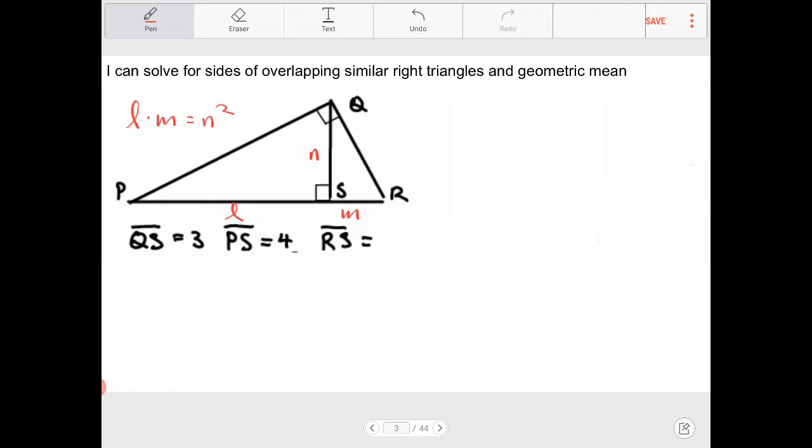Let's take a look at this. Pause the video to see if we can figure this out. So hopefully you had some time to think about this. We know that QS is equal to 3. We also know that PS is equal to 4. We're looking for RS. How are we supposed to do this?